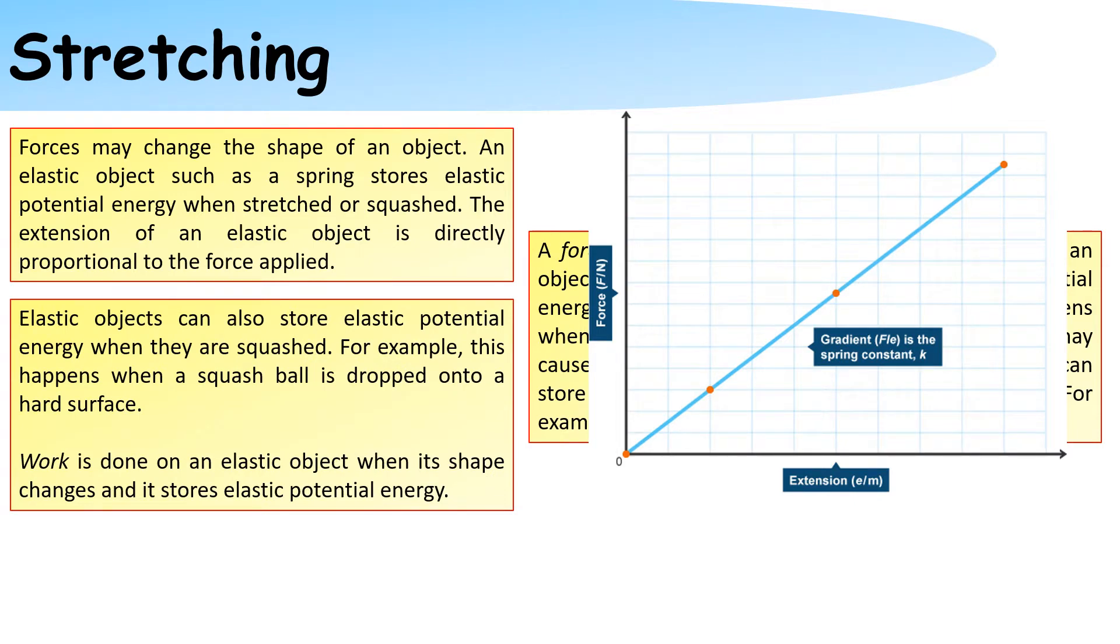Elastic objects can also store potential energy when they are squashed. For example, this happens when a squash ball is dropped onto a hard surface. Work is done on an elastic object when the shape changes and it stores elastic potential energy.